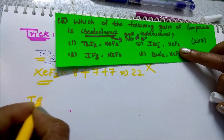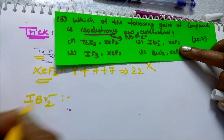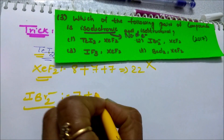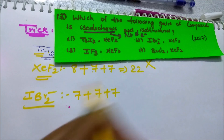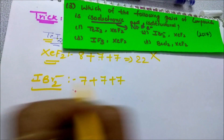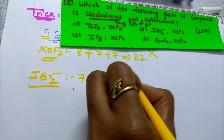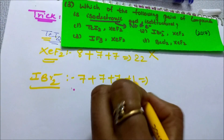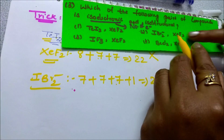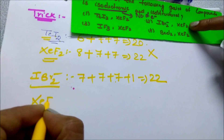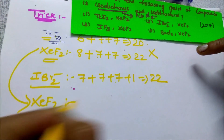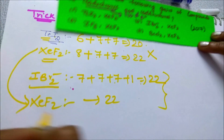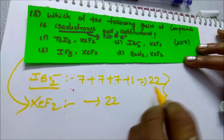For IBr2-: iodine has 7 valence electrons, bromine also has 7 each, and there are 2 bromines: 7+7+7=21, plus 1 for the negative charge gives 22. For XeF2 we already calculated 22. So IBr2- and XeF2 both have 22 valence electrons — they are isoelectronic.